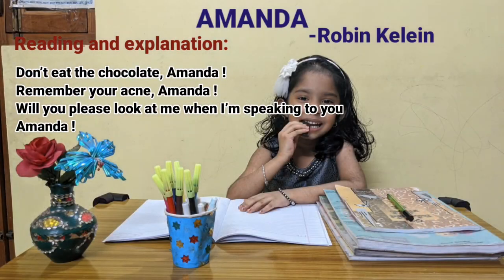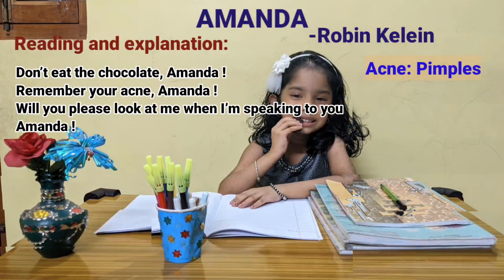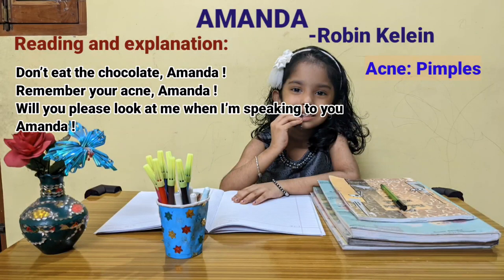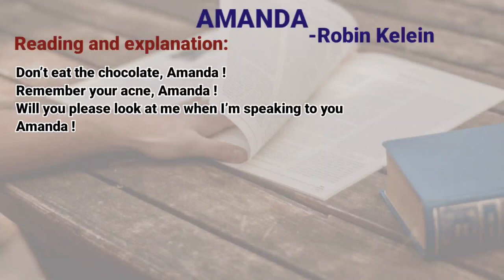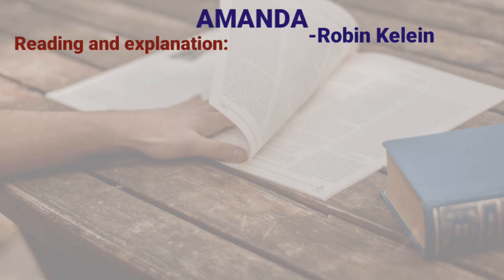In stanza 5: 'Don't eat the chocolate, Amanda. Remember your acne, Amanda. Will you please look at me when I am speaking to you, Amanda.' Acne here means pimples. Amanda is stopped by her mother from eating a chocolate as it previously caused her acne. Amanda's mother reminds her of the pimples that result from eating chocolates. When Amanda is still lost in her own thoughts and doesn't look up at her scolding mother, this carelessness further angers the parent, and she scolds her for not paying attention when being spoken to.